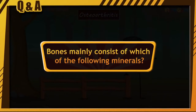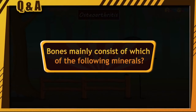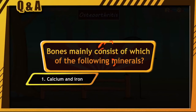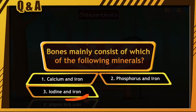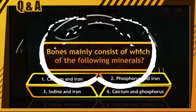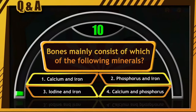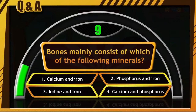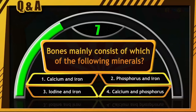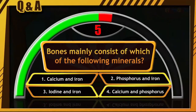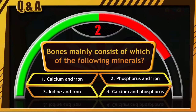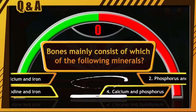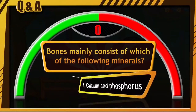Bones mainly consist of which of the following minerals? Calcium and iron, phosphorus and iron, iodine and iron, or calcium and phosphorus. The clock is ticking — start typing your answers. The correct option is option number 4, that is calcium and phosphorus.